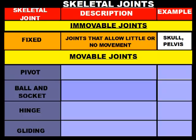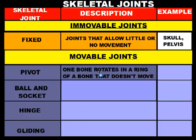The first movable joint we're going to talk about is called the pivot joint. A pivot joint is one bone that rotates in a ring of another bone that doesn't move. You can find pivot joints in a couple of places — in your neck, which allows your skull to pivot left to right, and also in your forearm.